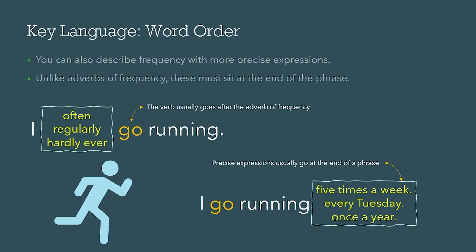Word order is very important. With basic sentences using adverbs of frequency, the verb usually goes after the adverb of frequency. So for example: 'I often go running.' Here, 'go' is the verb that goes after the adverb of frequency 'often.'